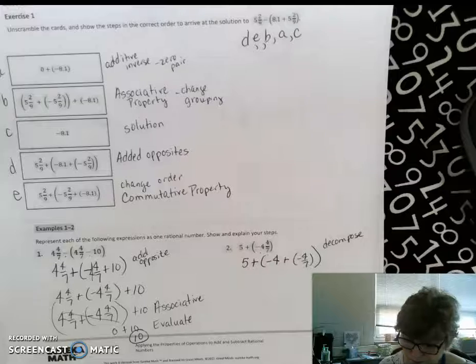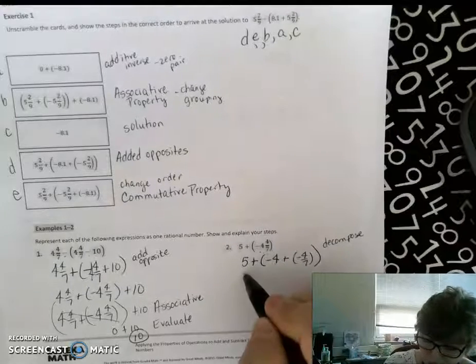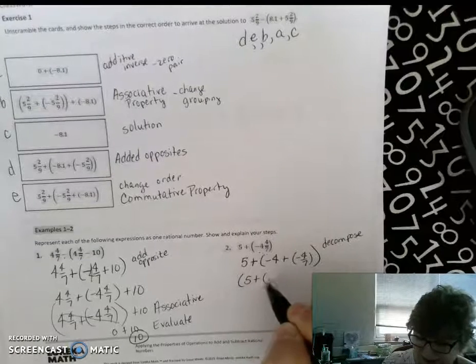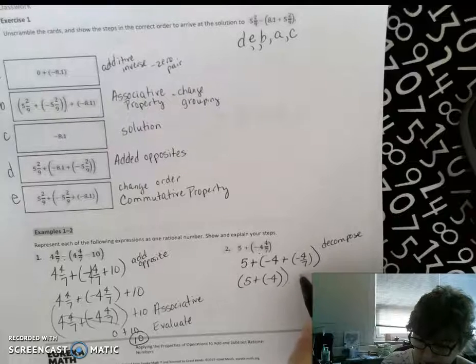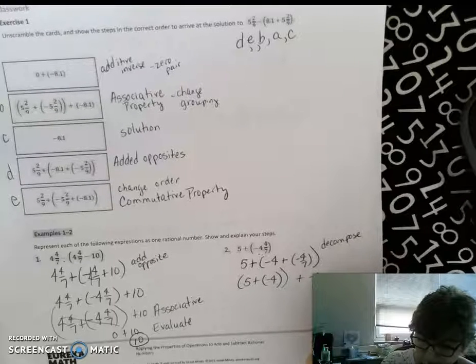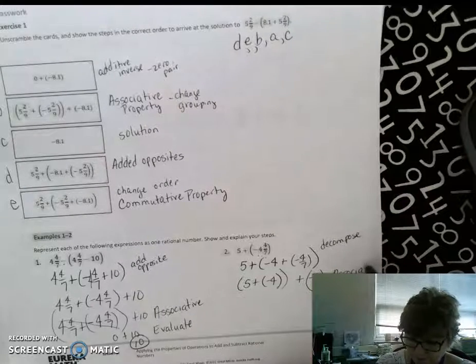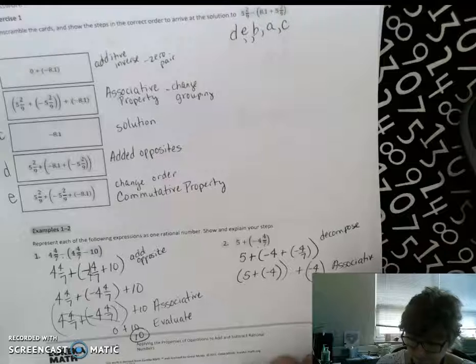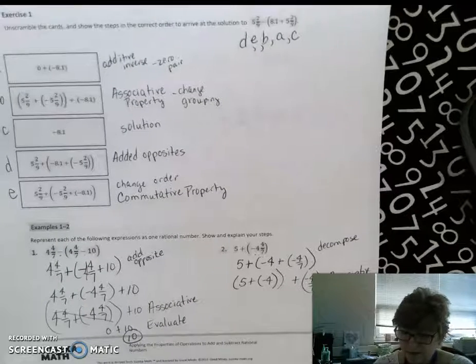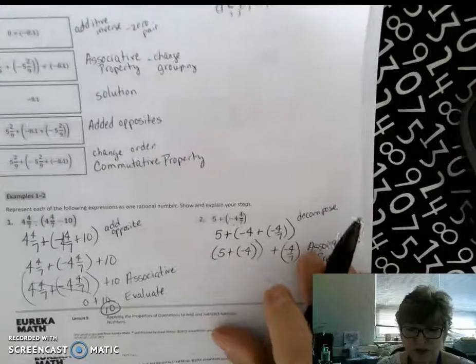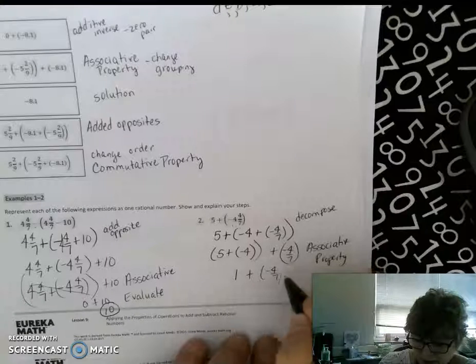Second step is looking at that associative property. And I am going to group 5 plus negative 4. And that is the associative property.